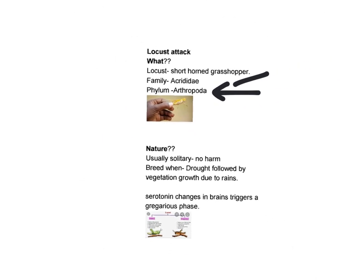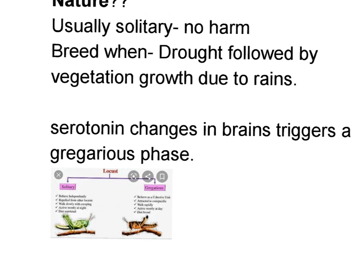Next we will understand the nature of these locusts. Usually they are solitary animals — they live alone or in small groups and do not cause any harm to humans, animals, or vegetation. However, sometimes they turn into the gregarious phase. This happens when there is a drought followed by vegetation growth due to unseasonal rains. At that time, serotonin changes occur in their brains — serotonin is a chemical that triggers the gregarious phase.